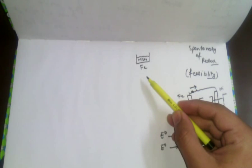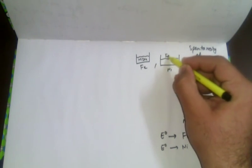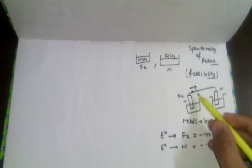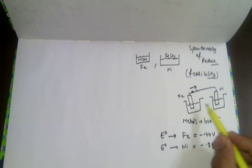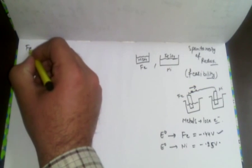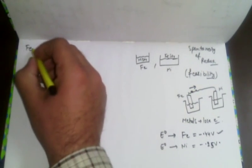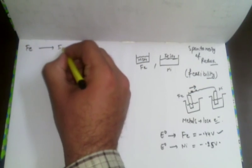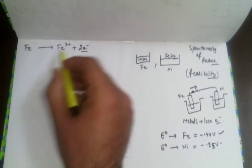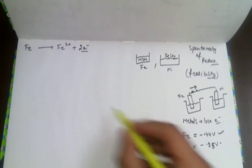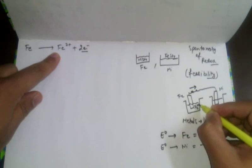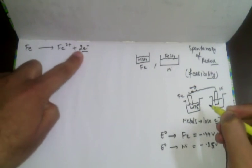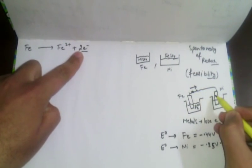However, we can place iron sulfate solution in a nickel beaker. In this reaction, on the negative side, iron will lose two electrons: iron breaks down and is released into the solution. These two electrons will move toward the other end of that electrode.